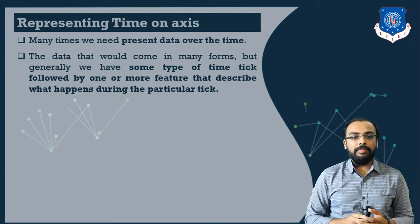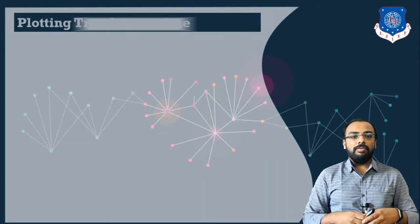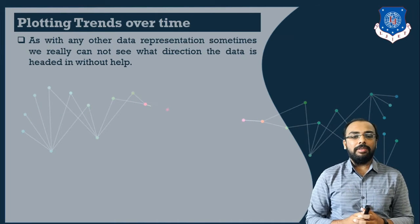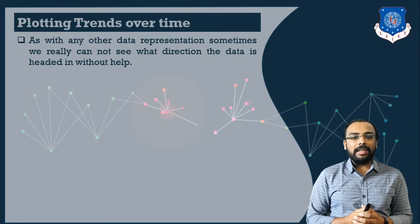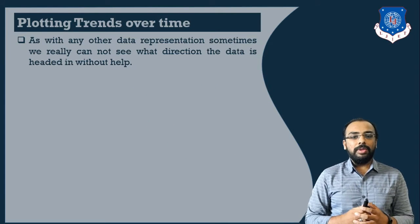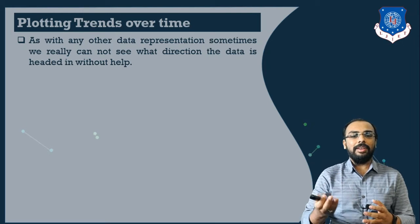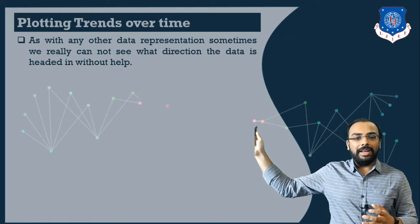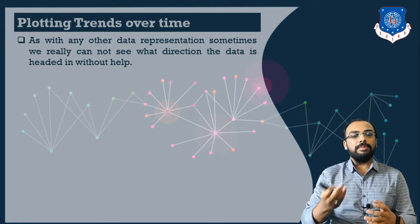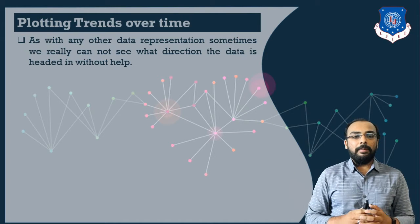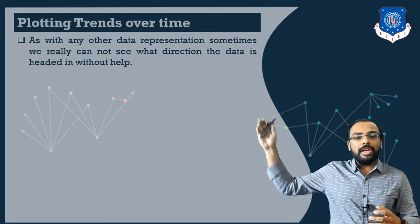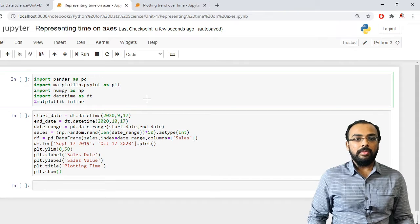Next, we will see how we can plot a trend over a particular time. If we want to determine in which direction our data is going, we don't have a direct approach to show that. It is possible to represent a trend line inside our output — a particular line that determines in which direction your data is moving or heading towards. In this programming approach, we will cover how to plot this and show trends over time.